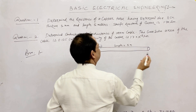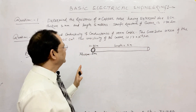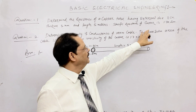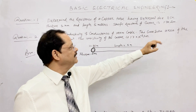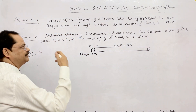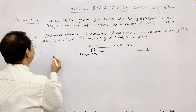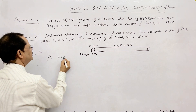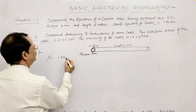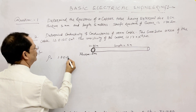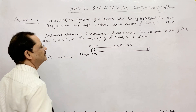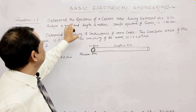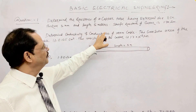The specific resistance of copper is given as 1.70 × 10⁻⁸ ohm-meter. So rho equals 1.70 × 10⁻⁸ ohm-meter. Now we have to determine the resistance of the copper tube.